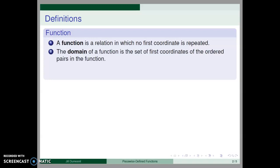The domain of the function is the set of first coordinates of the ordered pairs in the relation, and the range is the set of second coordinates of the ordered pairs in the relation.